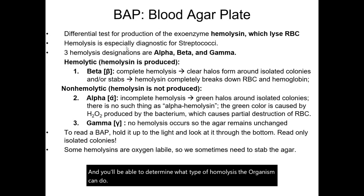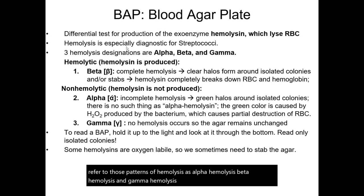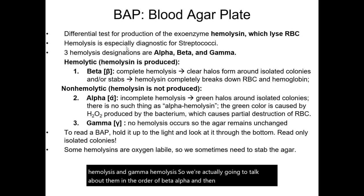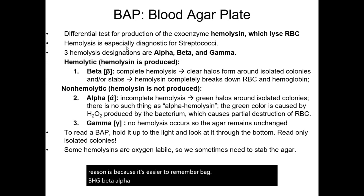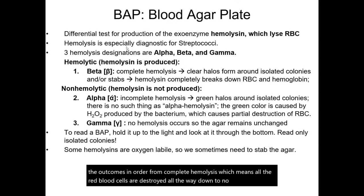There are three possible outcomes when you streak and stab an organism on a blood agar plate, and we refer to those patterns as alpha hemolysis, beta hemolysis, and gamma hemolysis. We're going to talk about them in the order of beta, alpha, and then gamma — BAG — because that order goes from complete hemolysis, where all the red blood cells are destroyed, all the way down to no hemolysis, where there are no hemolysins and the red blood cells are not damaged in any way.